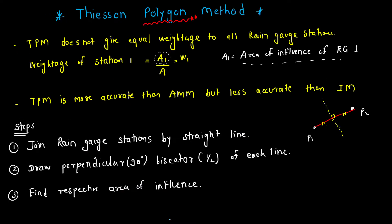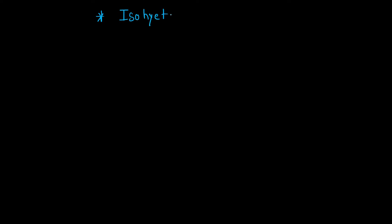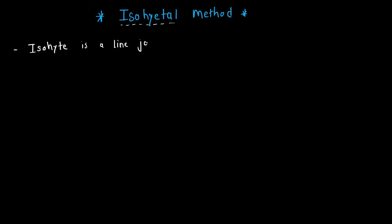The first question that should come to mind is: what is the meaning of the term isohyet? Isohyet means, or we can say an isohyet is, a line joining points of same rainfall or equal rainfall.